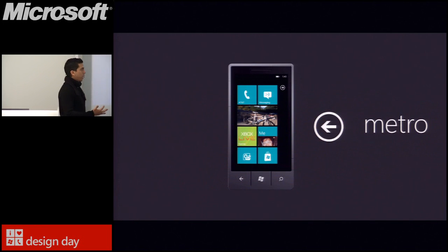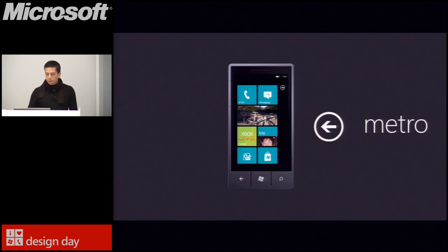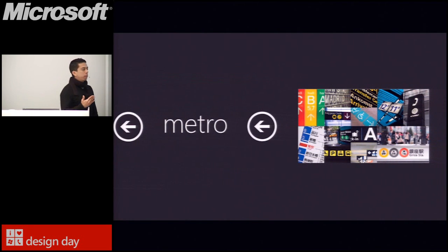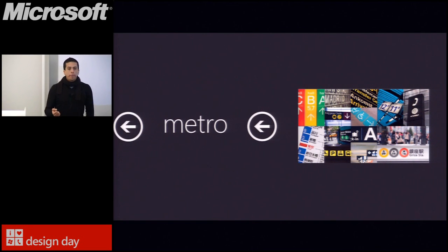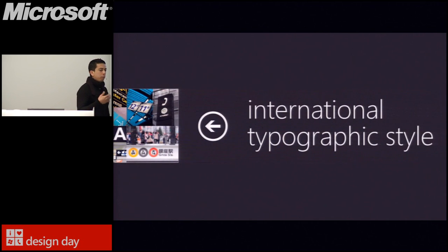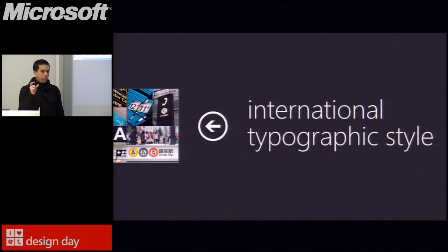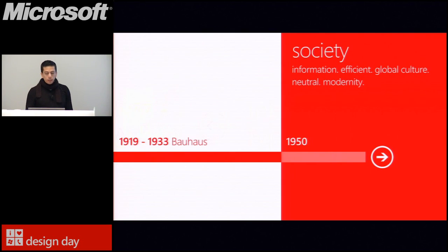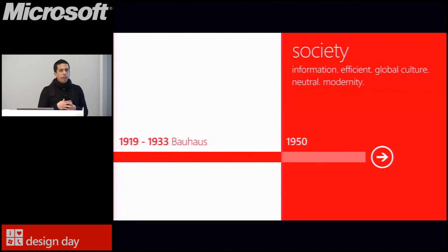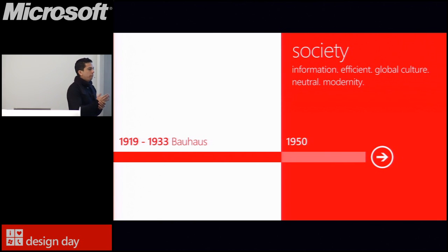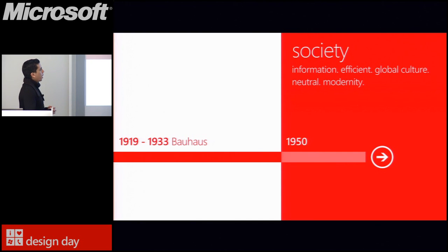A lot of times people ask us where Metro comes from, what influenced Windows Phone. We usually point to our source of influence: transportation graphics and urban signage. To truly understand the principles and where Metro comes from, we have to go back to the 1950s to explore a design style called the International Typographic Style, also known as the Swiss Style. This style was born in Europe, with important influence from Switzerland, and it really took over Europe — Nordic countries like Denmark, Sweden, Finland, and Norway are very passionate about this approach.